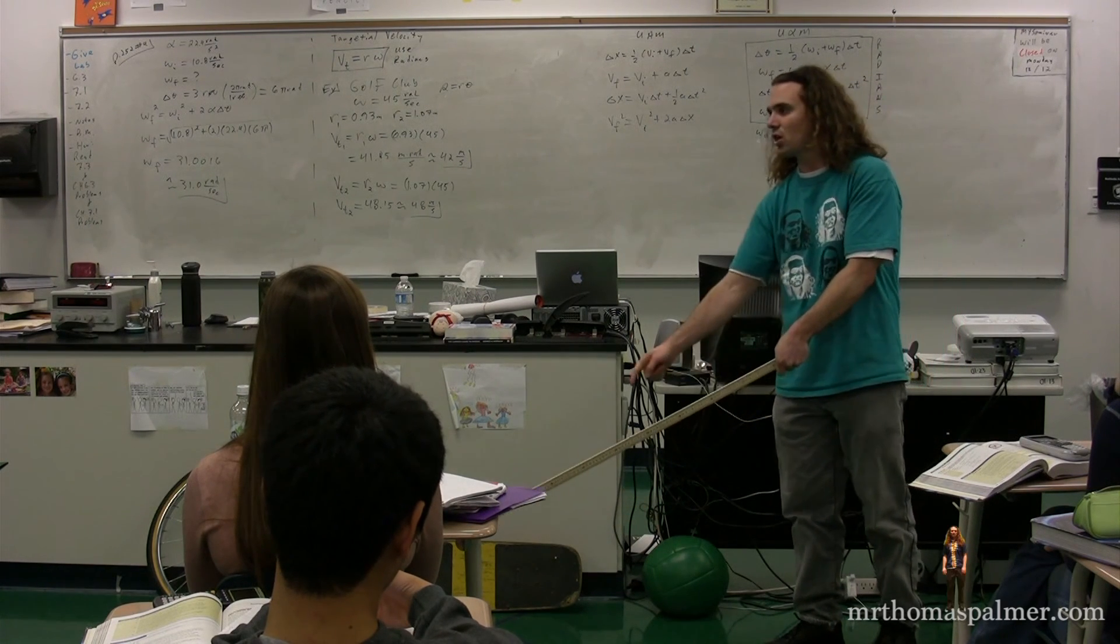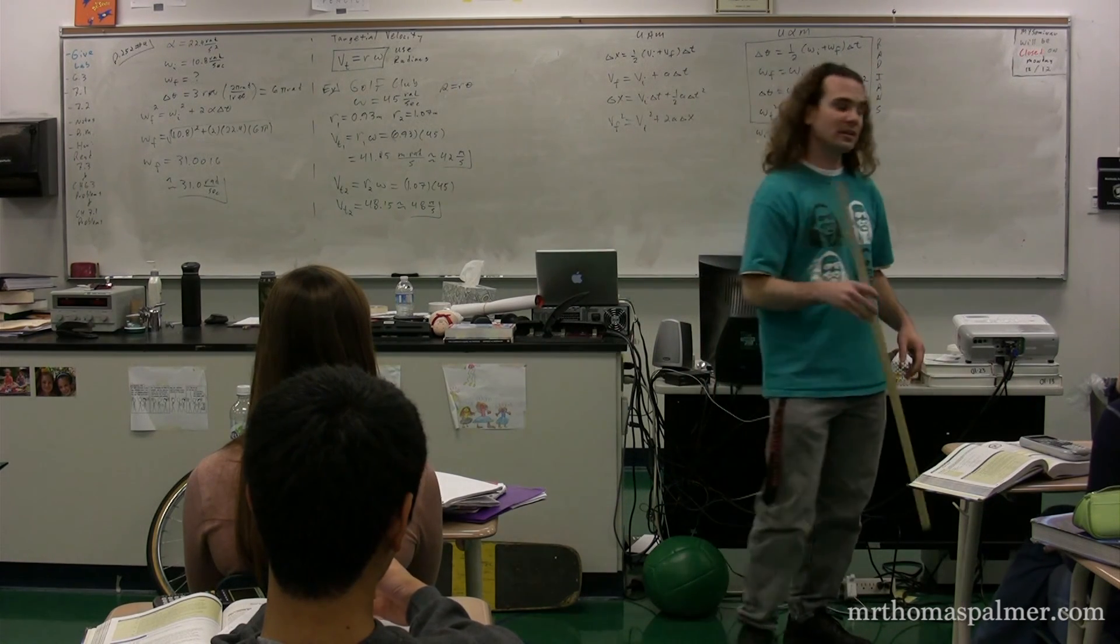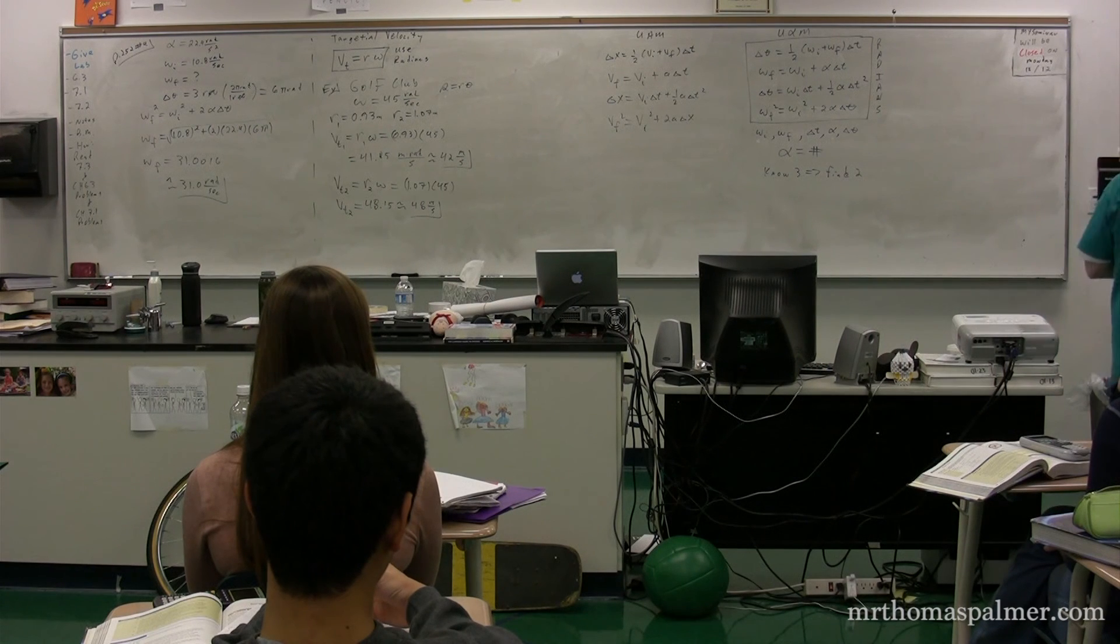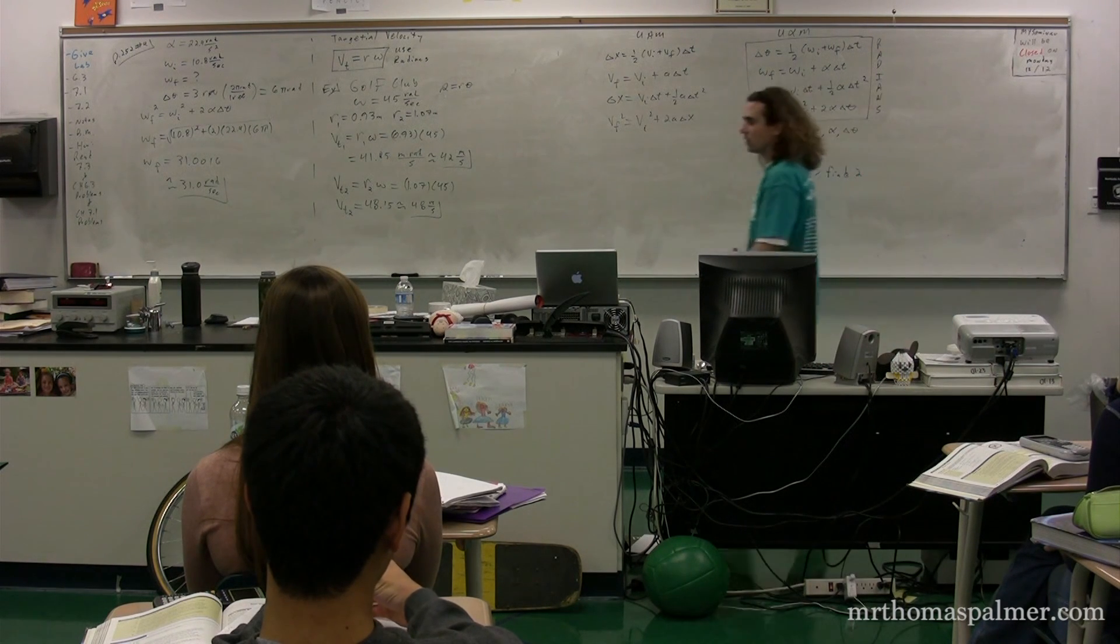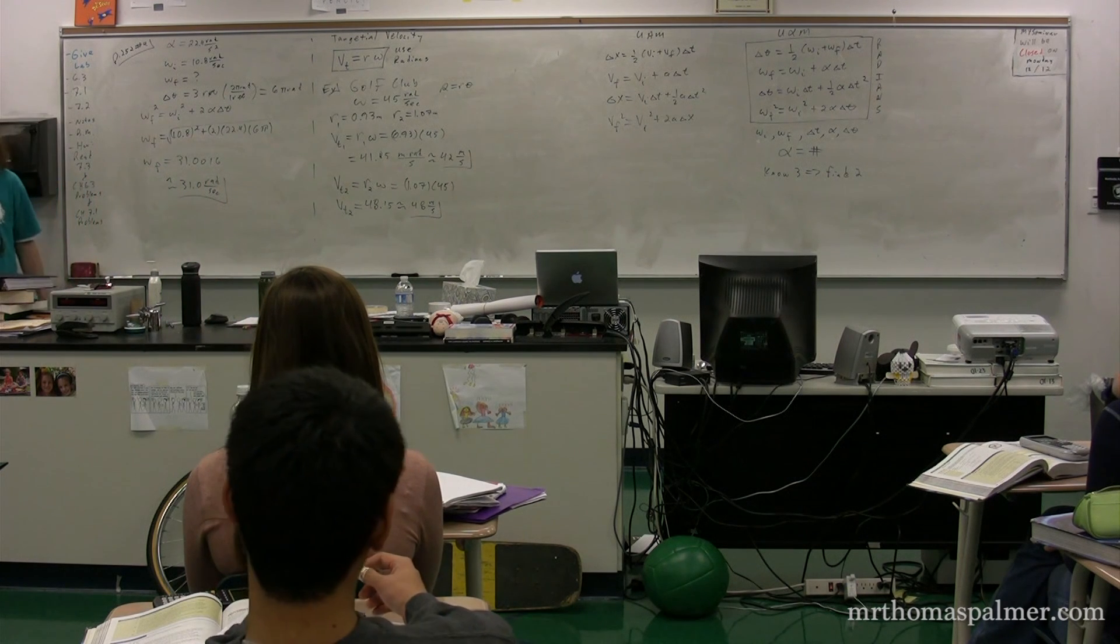So when you have the longer golf club, you actually have less control over the club head. So while it is true that the longer the length of the club, the farther the ball will go, you also lose accuracy the longer the length of the club. So it's a trade off. You have to decide how much accuracy you want versus distance.